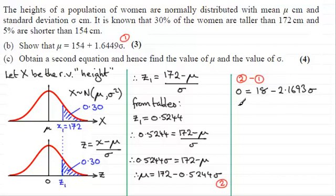And again, if we just rearrange this now, say we add 2.1693σ to both sides, then that will equal 18, then divide by the 2.1693, we end up with σ equaling 18 divided by 2.1693. And that gives us 8.2976 and so on. I won't round this up yet because I'm going to be using this in a moment in one of these equations because we need to get μ.